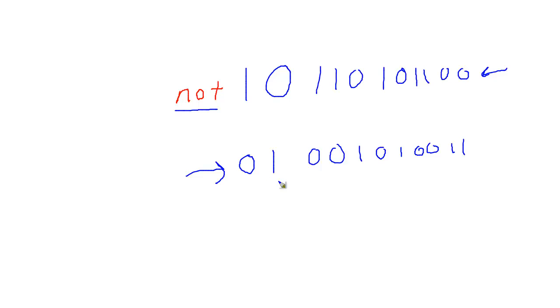Notice, with AND and OR, let me write them over here. AND and OR, that was a binary operation. Meaning, if I wanted to do an AND or an OR, I had to have two values to do that.